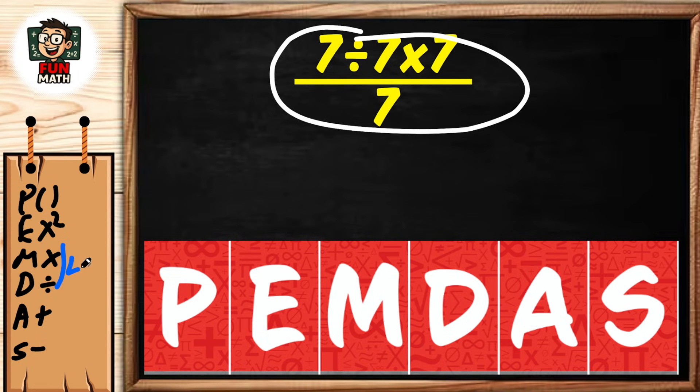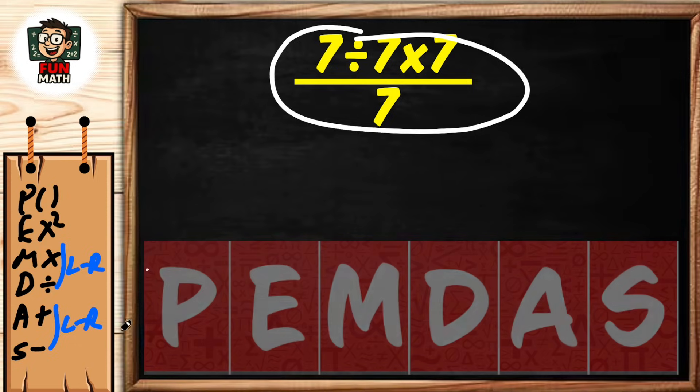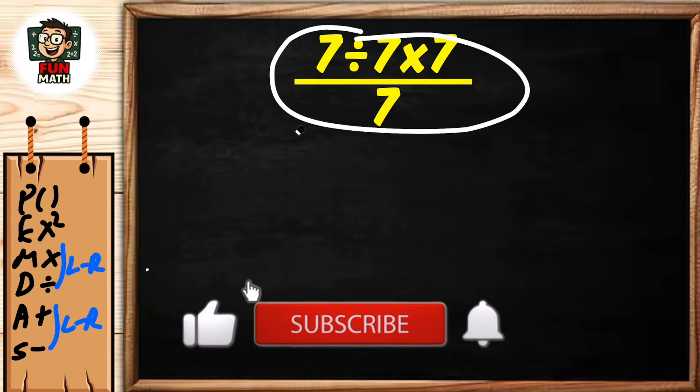They're performed from left to right. Similarly, there is no order between addition and subtraction operations. They are performed from left to right. Let's apply this rule to our equation.